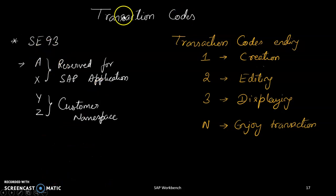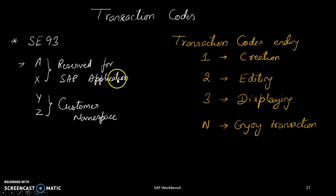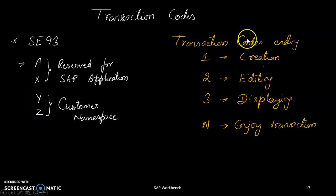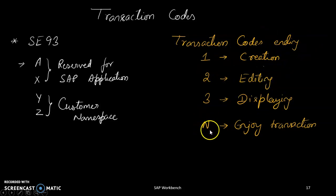Transaction codes from A to X are reserved for SAP applications and cannot be used by customers. Y and Z are customer namespaces — if we create a transaction code, it should start with Y or Z. Transaction codes ending with 1, 2, and 3 correspond to creation, editing, and displaying respectively.